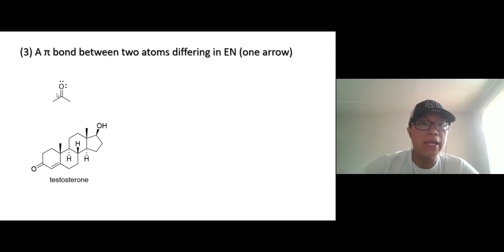All right, two more patterns. The next one: if you see a pi bond between two atoms that have different electronegativity, for example this one right here. I'm sure you can tell that carbon and oxygen—oxygen is more electronegative, which means that the pi electrons between them won't be shared equally. Oxygen's gonna pull it onto itself.